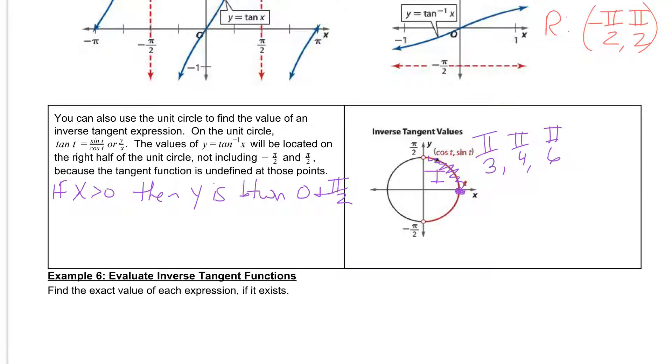Now, if we go and look, if x is less than 0, so if x is negative, then y is between negative pi over 2 and 0,